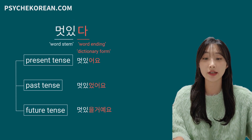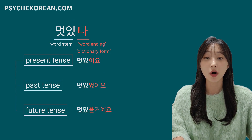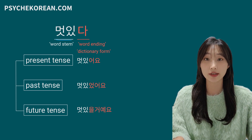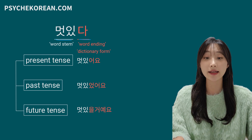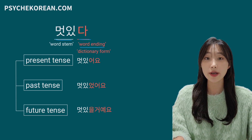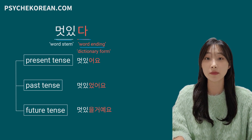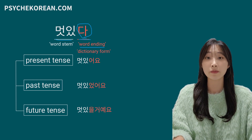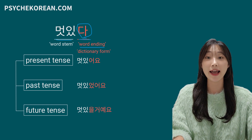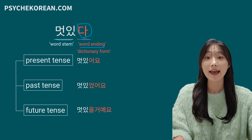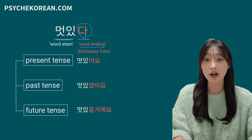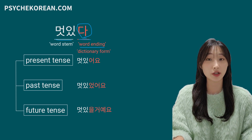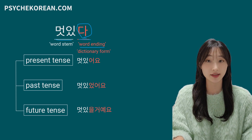I'll give you an example adjective: 멋있다, which means 'to be handsome.' 멋있 is the word stem and 다 is the word ending. Always the word ending in dictionary form is 다, so if you look at a Korean vocabulary book, verbs and adjectives always end with 다. This 다 part is the conjugating part, and I'm going to teach you how to conjugate it to make the present tense today.